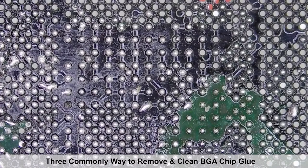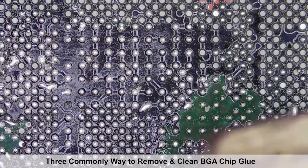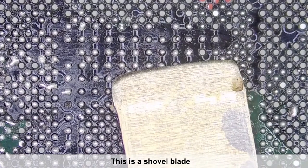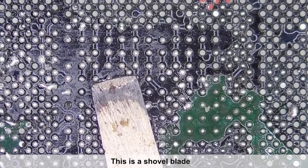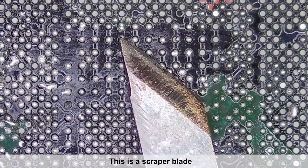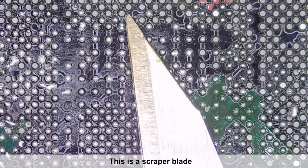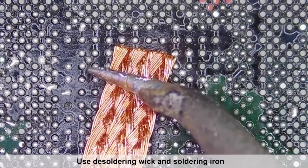Three commonly used ways to remove and clean BGA chip glue. This is a shovel blade. This is a scraper blade. Use desoldering wick and soldering iron.